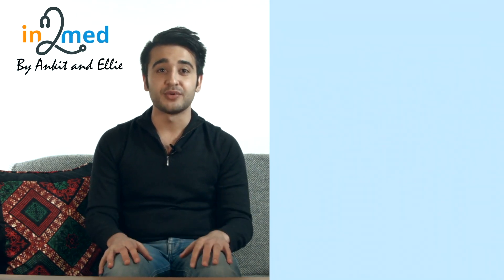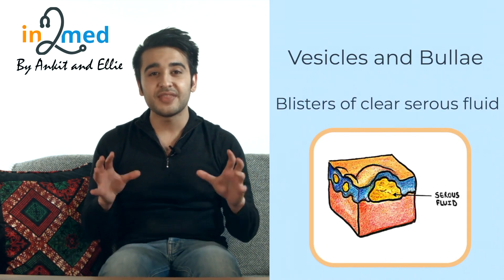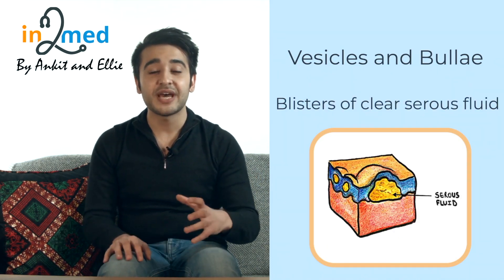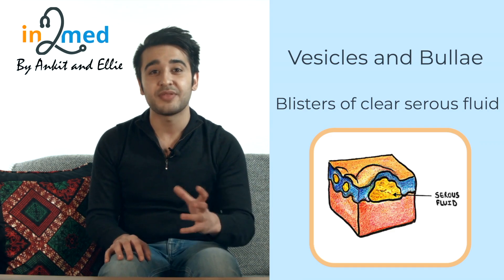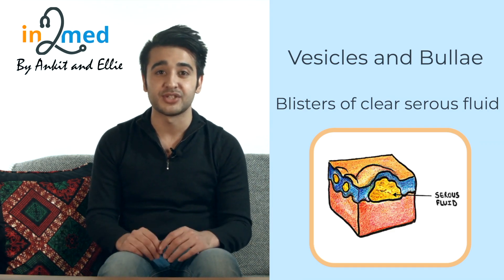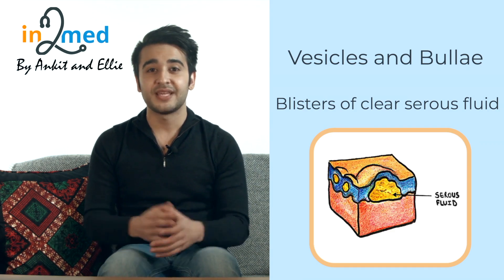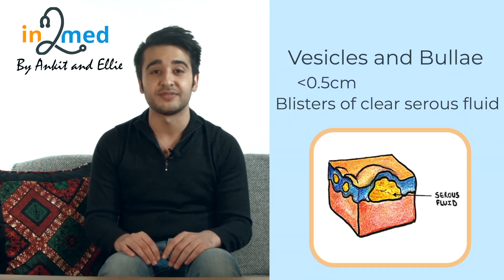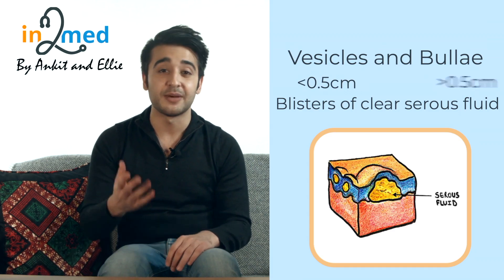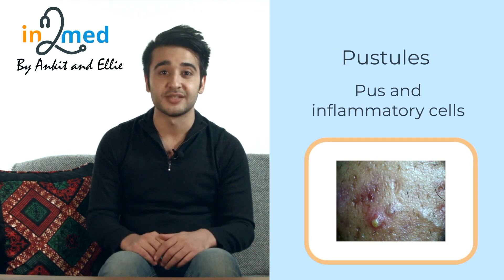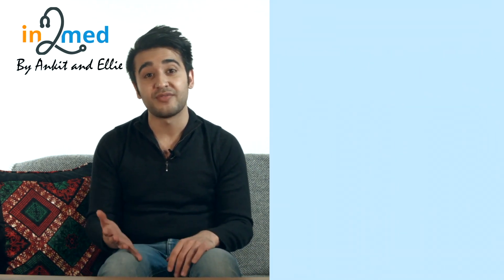The next group are vesicles and bullae. These are blisters which are full of clear serous fluid. Unlike cysts, they don't have a complete epithelial lining, which makes them less well demarcated from the surrounding tissue — cold sores being one example. Vesicles are less than 0.5 centimetres and bullae are larger. Next we have pustules, which are cavities full of pus and inflammatory cells. These can also be sterile or infected.